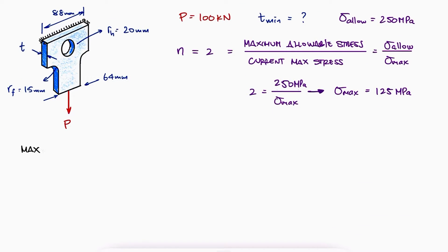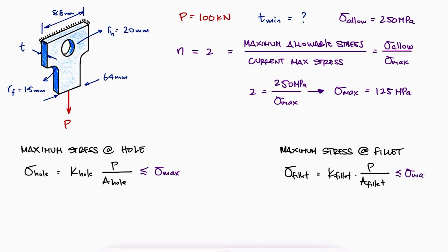This maximum stress will either occur at the hole or at the fillet, and in both cases the expression for the maximum stress will be equal to the stress concentration factor K times the axial normal stress P over A. Neither of these should exceed the maximum stress.